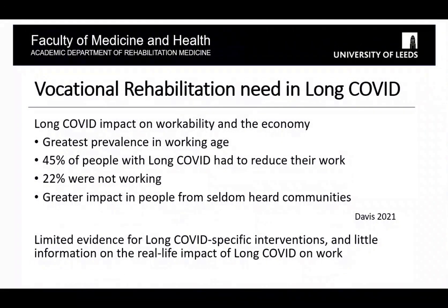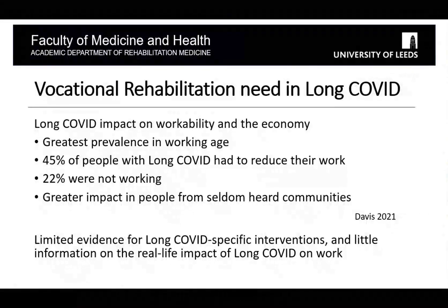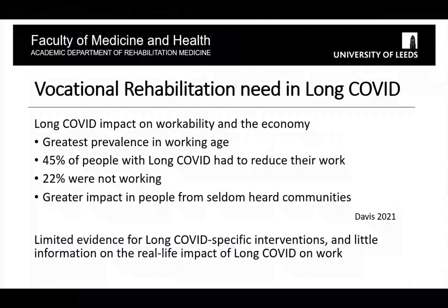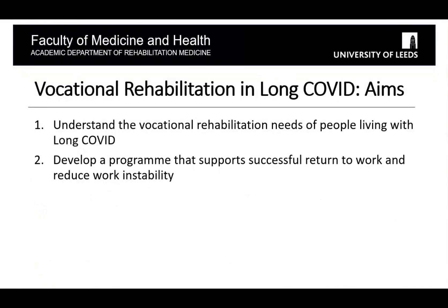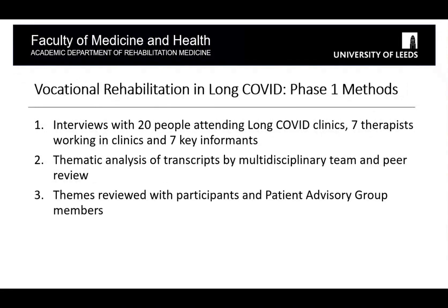When we started out, there was no evidence whatsoever for vocational rehabilitation interventions in Long COVID. We were bringing together interventions from other conditions, particularly around management of fatigue and musculoskeletal conditions. Workstream 1.4 around vocational rehabilitation had two aims: first, to understand the needs of people with Long COVID; and second, to develop a program. We're just about to embark on the second aim.